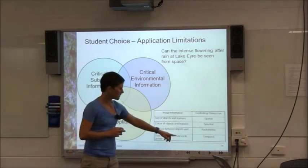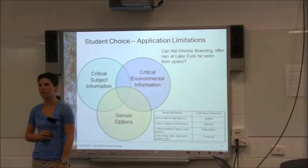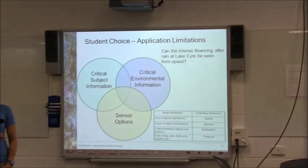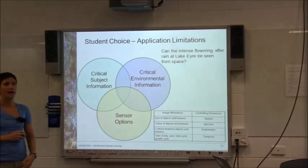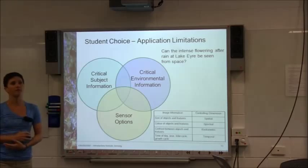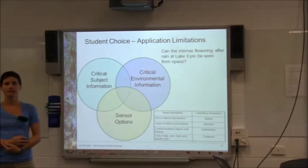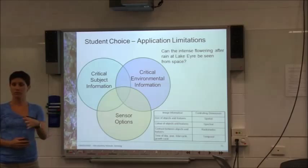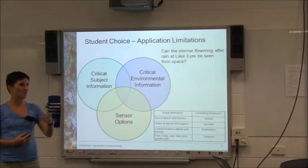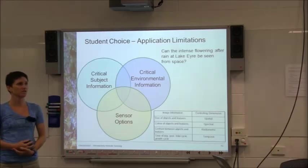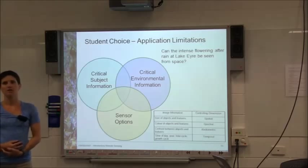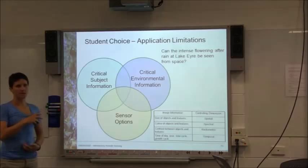What about temporal information — what do we need to know about the plants or environment? How long they flower for, what time of year it is, the seasons, when the rain is expected, and how soon after the rain the flowering occurs — that's really important. Does that process make sense?